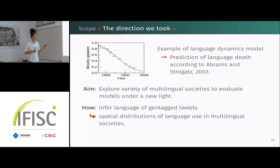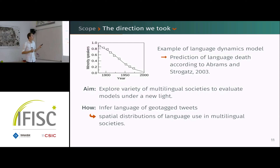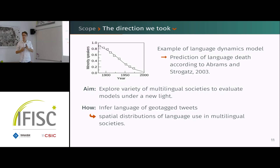This work had impact because they fit their model to some data — like the use of Welsh in Wales, which was declining — and they predicted the death of the language within a few decades of the publication. But here we wanted to study more of the diversity of multilingual societies, because considering just monolinguals might not be enough.